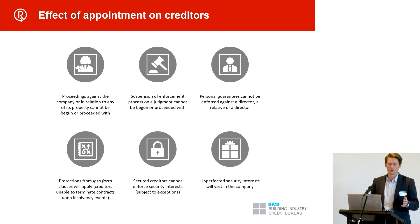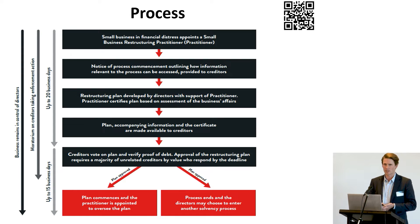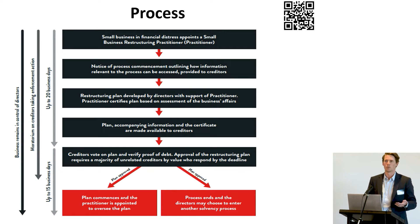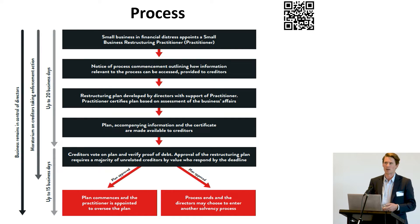This is a high-level overview of the process. It's really split into two phases: the first is the proposal phase, which is 20 business days; the second is the acceptance phase, which is 15 business days. Overall the period runs for 35 business days — a pretty short space of time, slightly longer than a standard voluntary administration at about 25 business days. The idea is to get in and get out as quickly as possible with as little disruption to the business as possible.